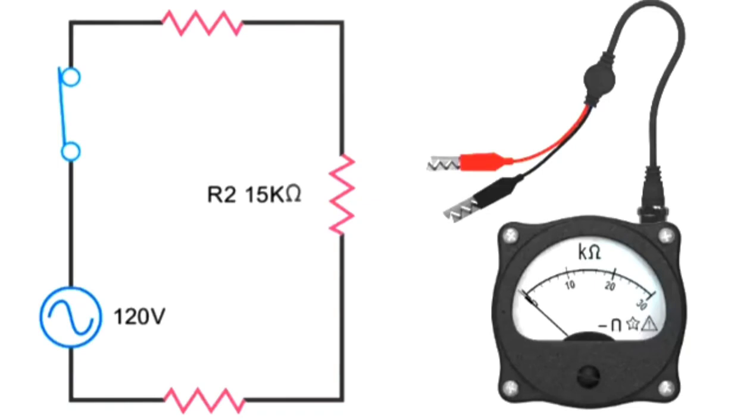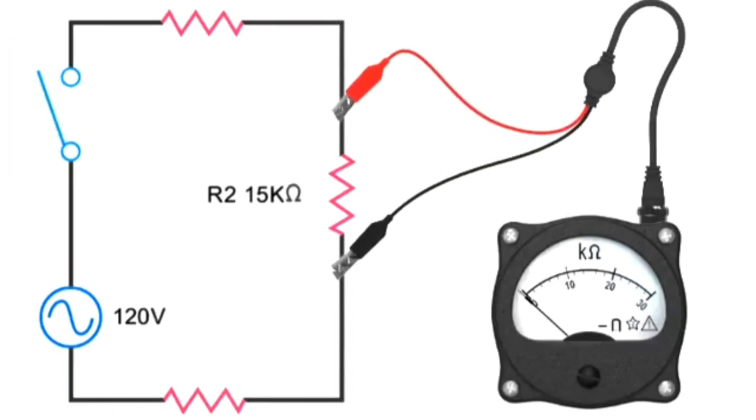Ohmmeters are never to be used in a powered circuit. It can damage the meter as well as present a safety hazard. So make sure switches are open before applying the leads of an ohmmeter to a circuit.